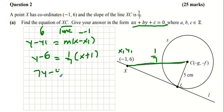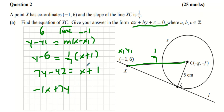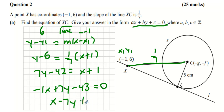Multiply across by seven and we get 7y minus 42 equals x plus one. Move everything to one side and we get minus x plus 7y minus 43 equals zero. Another version of that answer is to multiply both sides by minus one. Either answer is acceptable — check your mark scheme and move on.